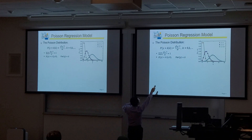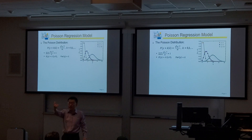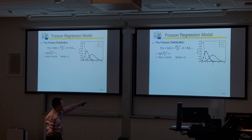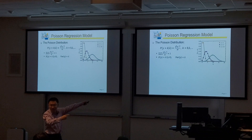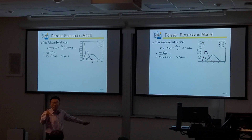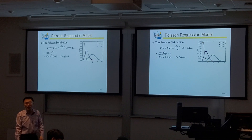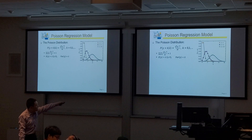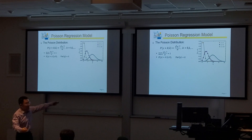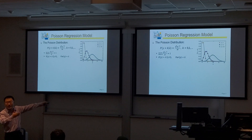Formula-wise, this is the Poisson distribution. The probability of y taking a certain integer k — being 0, 1, 2, 3, all the way to infinity — is equal to this expression. This is a valid probability measure: if you add up all non-negative values from 0 to positive infinity, these values add up to 1, and each is non-negative.